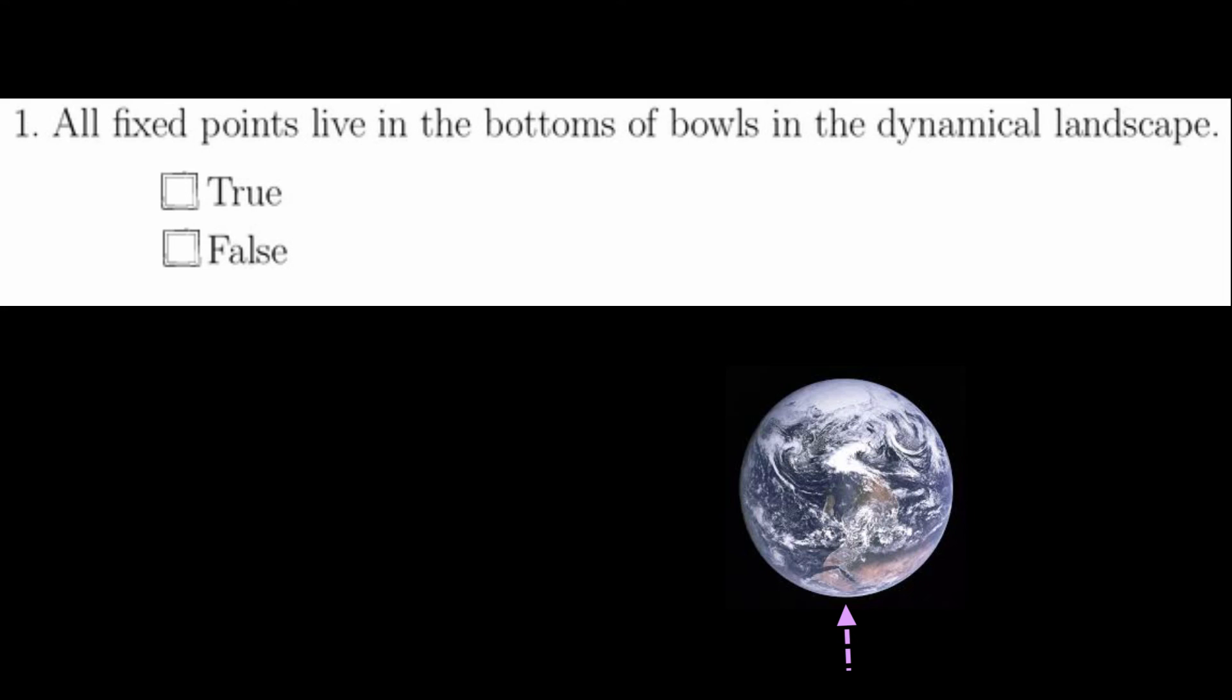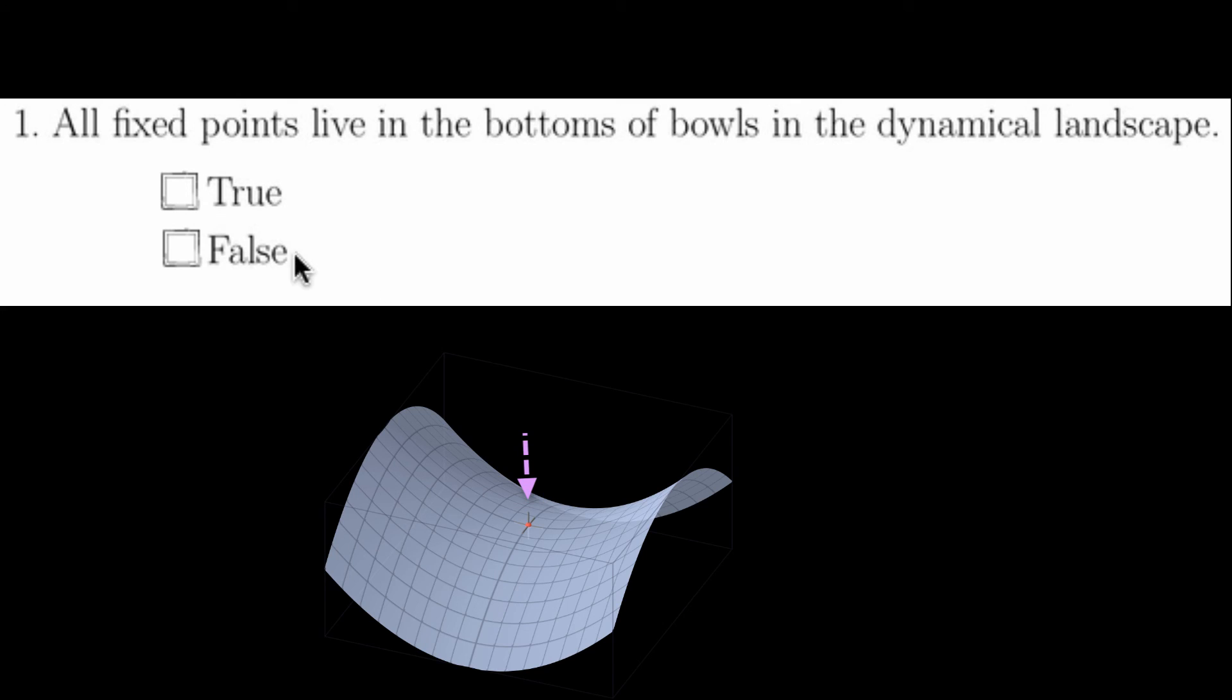The first question is whether or not all fixed points live on the bottom of bowls in a dynamical landscape. This is absolutely not the case. For example, we saw in lecture that fixed points can not only occur on the bottom of bowls but also on the top of bowls that are upside down and at saddle points. So this question is false.